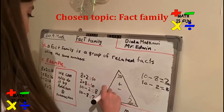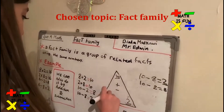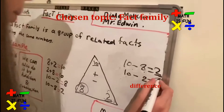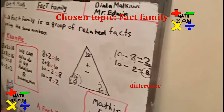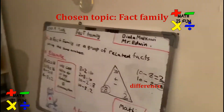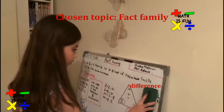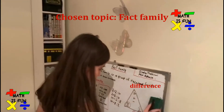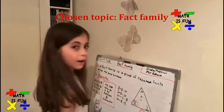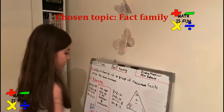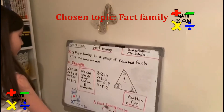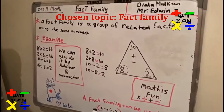What is the missing number? The missing number is 8. So the answer will be 8, or the product will be 8. And here we have a fact family of 9.